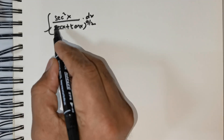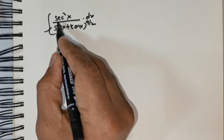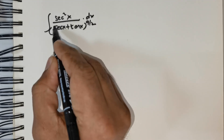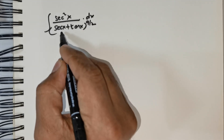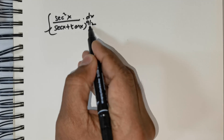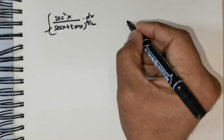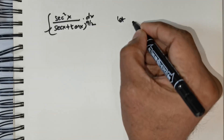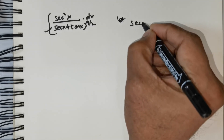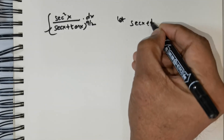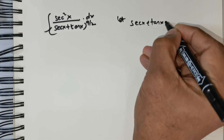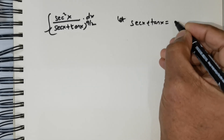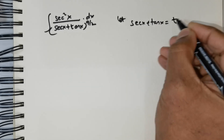Welcome students. We are expected to integrate secant squared x over secant x plus tan x raised to the power of 9 over 2. To begin, I wish to make the following substitution: let secant x plus tan x be equal to some t.